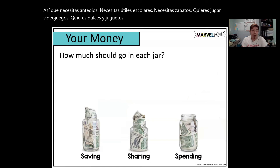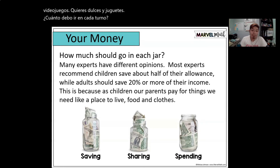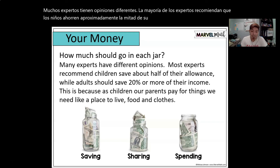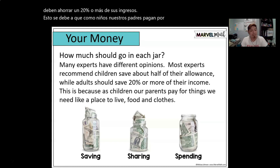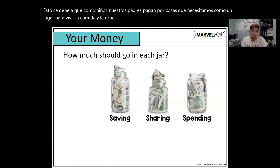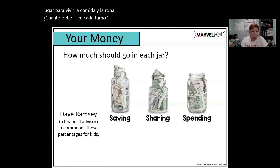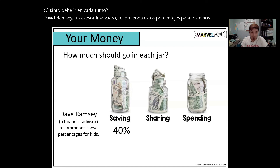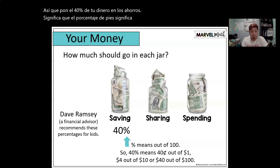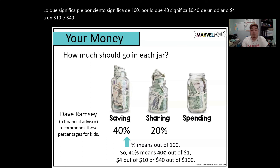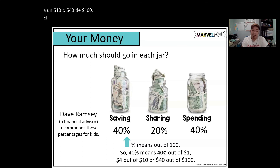How much should go in each category? Many experts have different opinions. Most experts recommend children save about half of their allowance, while adults should save 20% or more of their income. This is because as children, our parents pay for things we need, like a place to live, food, or clothes. Financial advisor Dave Ramsey recommends these percentages for kids: 40% into savings, 20% into sharing, and 40% into spending.